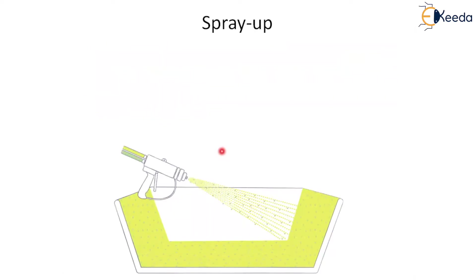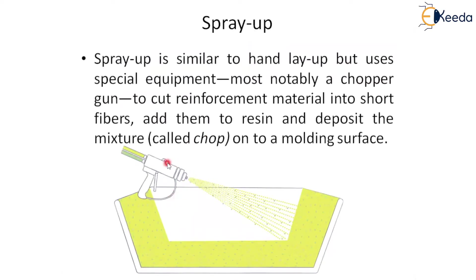Another method is the spray up process — the only change is the equipment used to apply the material. Here we use a chopper gun or spray gun to spray the raw material directly onto the surface. The chopper gun cuts the required material into short fibers, mixes it with resin, and deposits the mixture onto a molding surface. This spray up method provides a more uniform molding process, which is not possible manually.